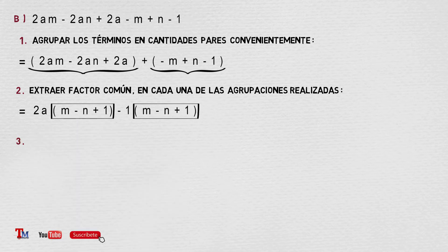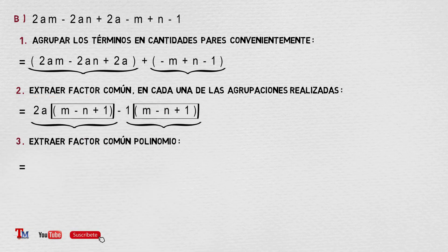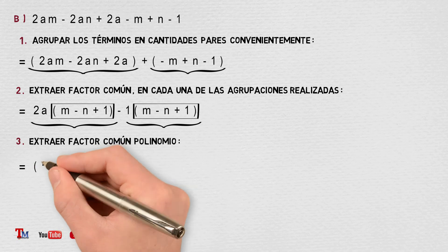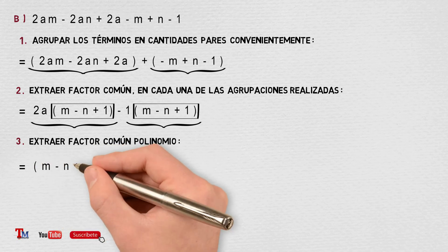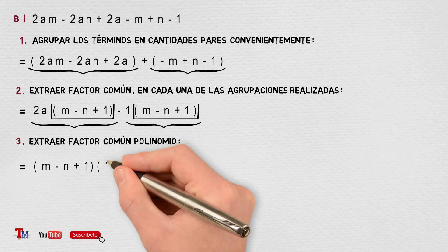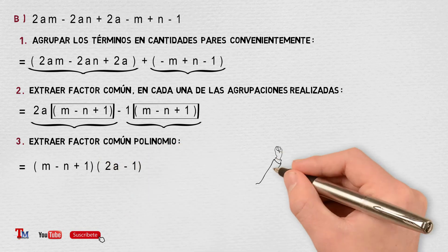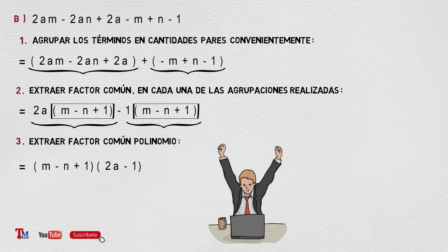Paso número 3: Extraer factor común polinomio. El MCD sería m menos n más 1, que multiplica a 2a menos 1. Espero que hayas comprendido mucho mejor.